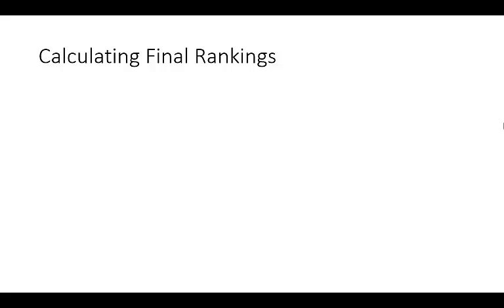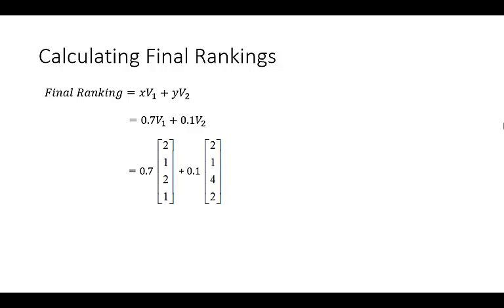So how do we calculate the final rankings? The final ranking is going to be some number multiplied by vector 1 plus some number multiplied by vector 2. Those numbers are determined by the sport administrators. They decide how important is the first order dominance vector and how important is the second order dominance vector. So in this case, we'll let x equals 0.7, y equals 0.1, because we decide that the first order dominance vector is much more important in determining the rankings. So 0.7 times that vector plus 0.1 times that vector gives us final rankings vector.